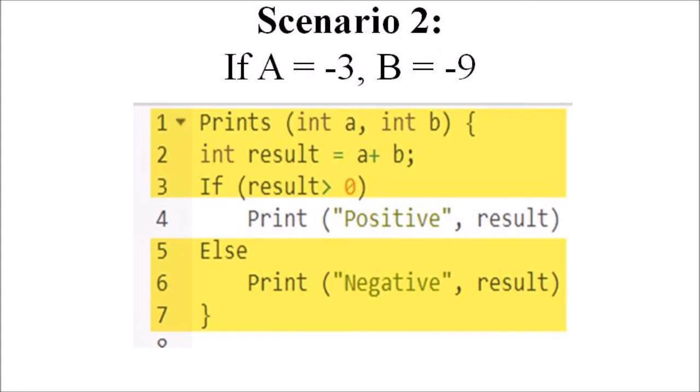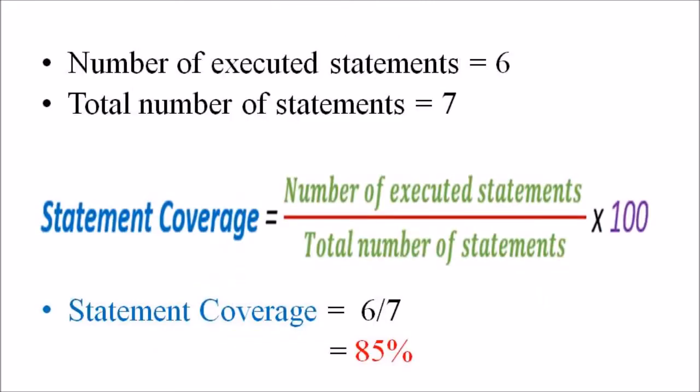In scenario 2, if we submit the value of a as minus 3 and b as minus 9, then the result equals a plus b, that is minus 3 plus minus 9 which equals minus 12. The checking condition checks if minus 12 is greater than 0 — that statement is false — so it goes to the else statement and prints the negative result. The total number of executed statements are 6, therefore the statement coverage equals 6 divided by 7, which equals 85 percentage.